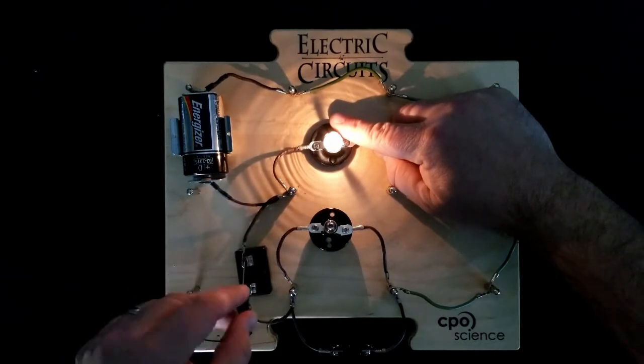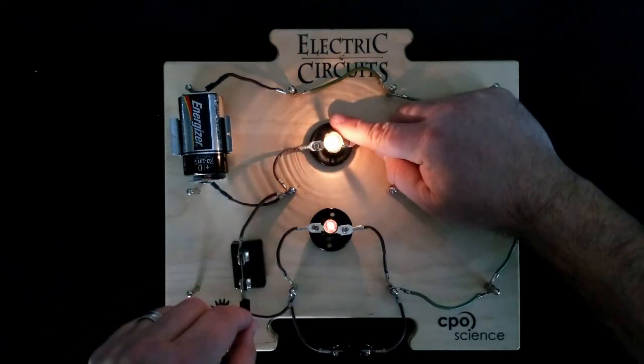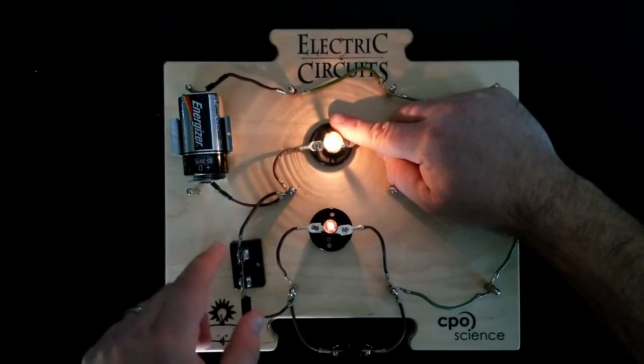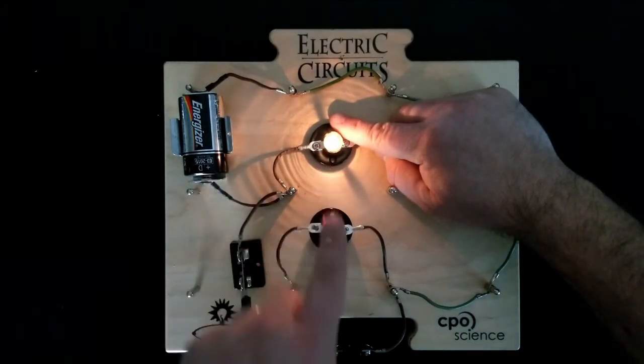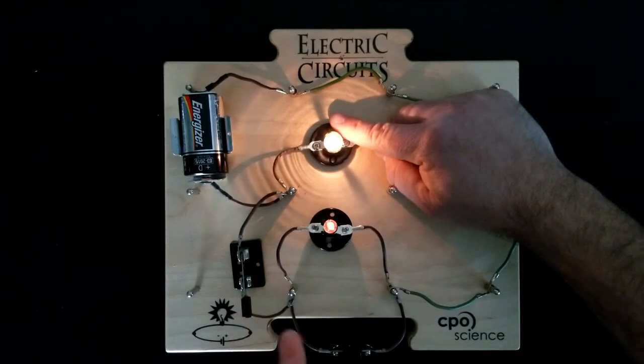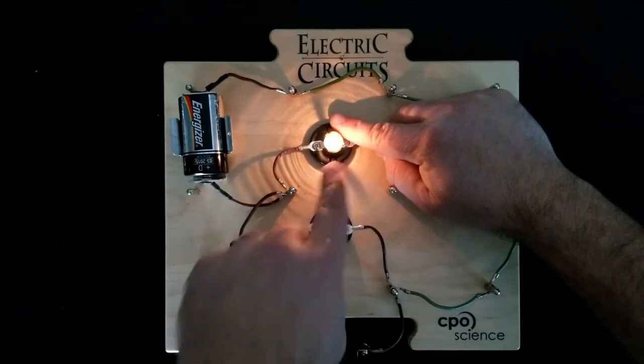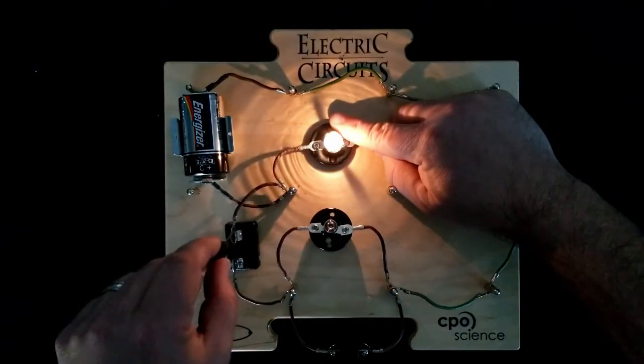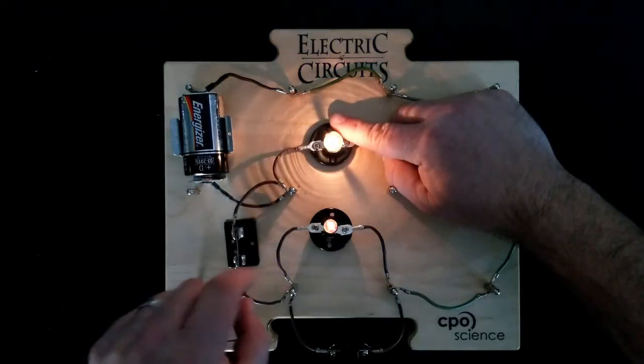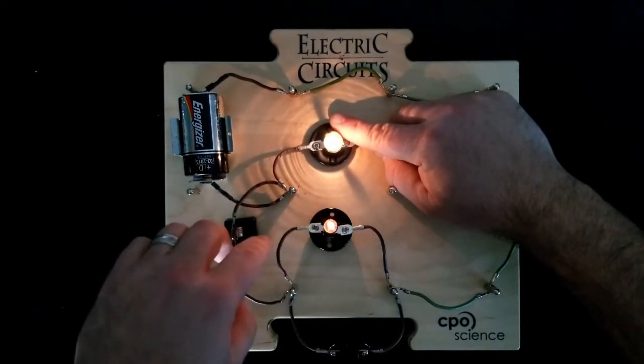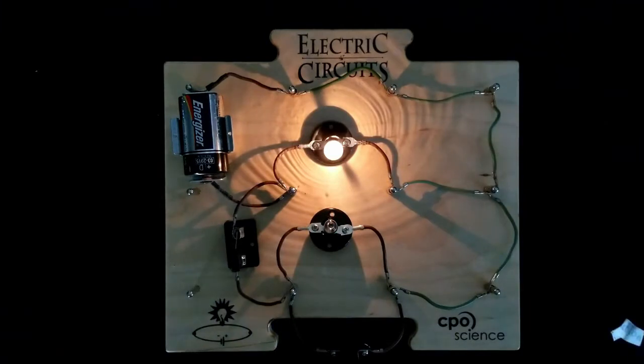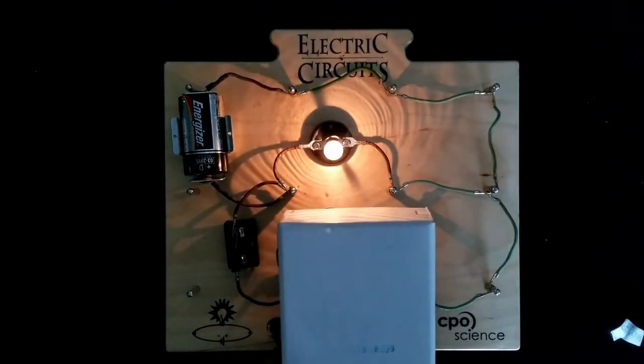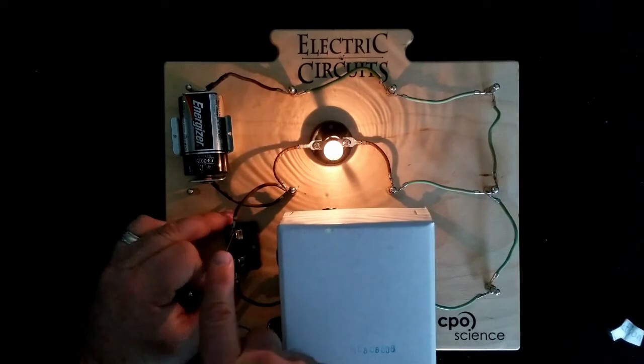Here we go, we're going to close this switch in three, two, one. So what you should have noticed is when I close this switch and now have current going through this part of the circuit, the brightness of this bulb went down. Let's try that again—switch open, it's pretty bright, close the switch, the brightness of this one went down.